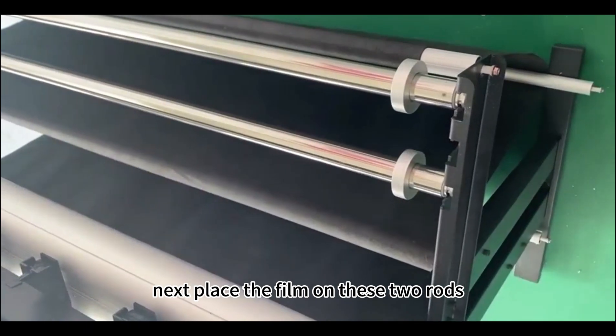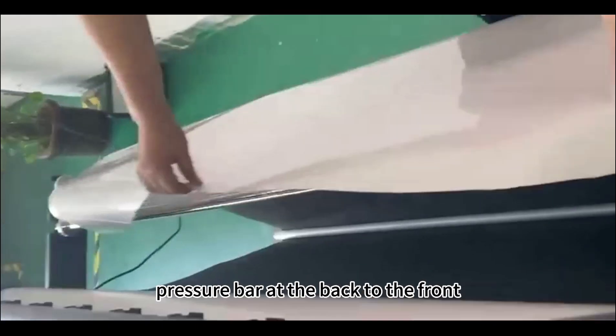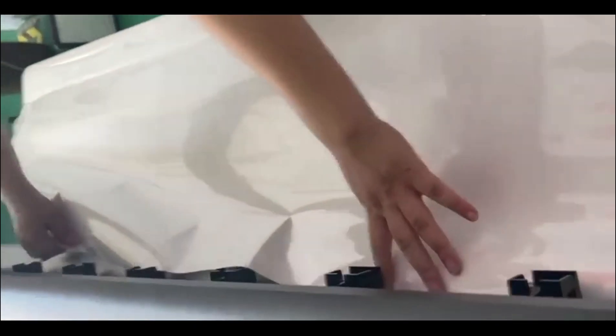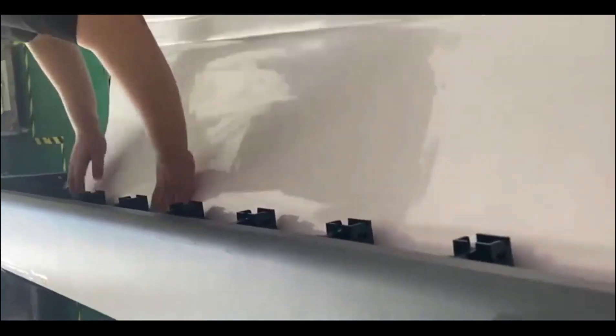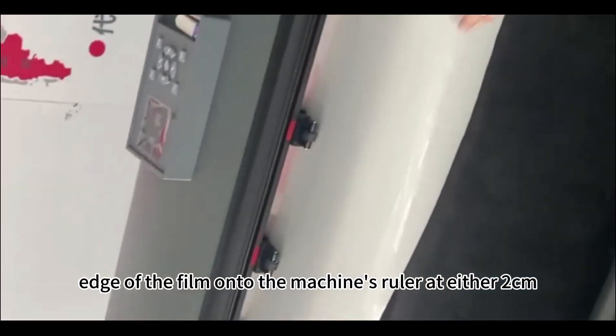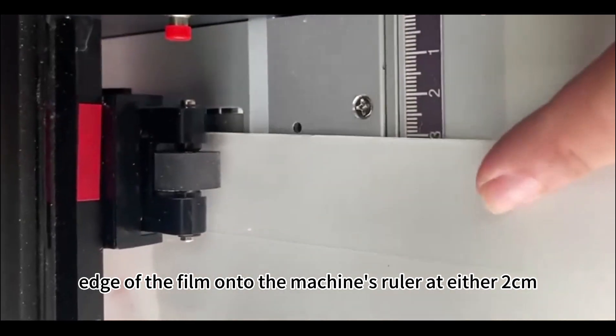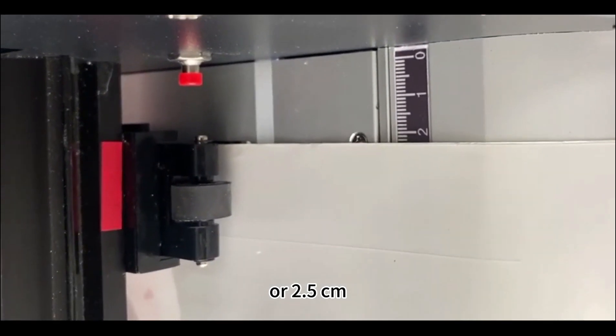Next, place the film on these two rods and thread it from under the pressure bar at the back to the front. Secure the edge of the film onto the machine's ruler at either 2 cm or 2.5 cm.